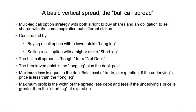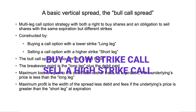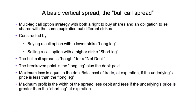We construct a bull call spread by buying a call option with a lower strike — we call that the long leg. The long leg gives us the right to buy shares at the strike price all the way up to expiration. Against the long leg, we sell a call option with a higher strike — we call that the short leg. When we sell the call option with a higher strike, we bring in money, but we also have an obligation to sell shares at that strike price all the way to expiration.